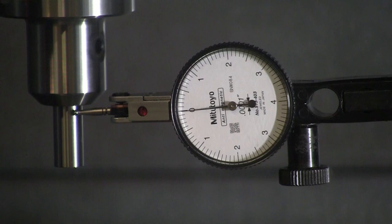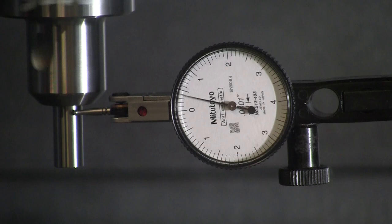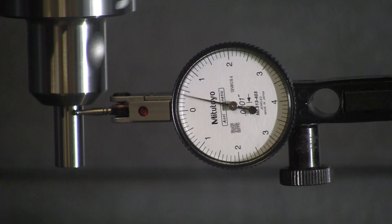I've got the indicator set up on the gauge pin up close to the nose of the end mill holder. And we're getting 4 tenths right here. And as it runs for a little bit, we see it creep up to about 5 tenths. I'm not quite sure why that is. But maybe the temperature is changing in the room. Anyways, so we get about 4 and a half tenths, almost 5 tenths right there.